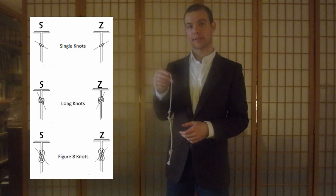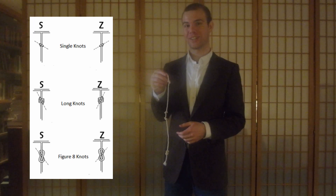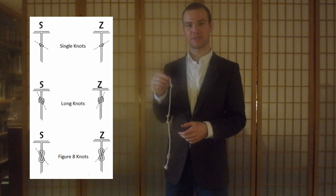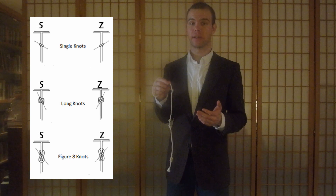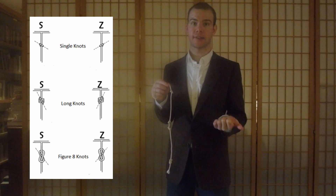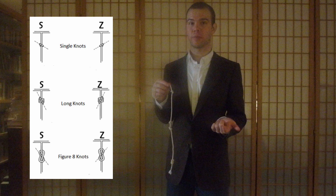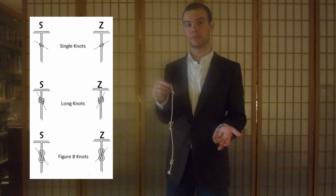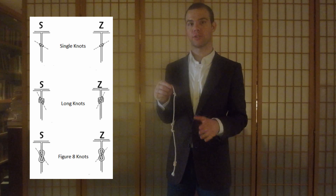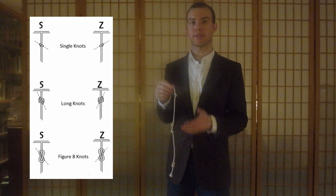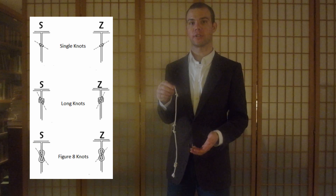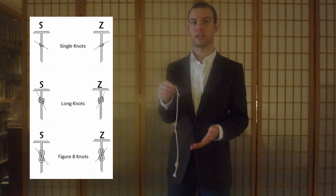Figure-8 knots can be tied in two different ways as well, in an S or a Z direction. And long knots can also be tied in four unique ways: in an S direction, a Z direction, and up or down. So there's a lot of complication that can go into how each one of these knots was made, and these could all be potentially significant signs in interpreting a kipu.